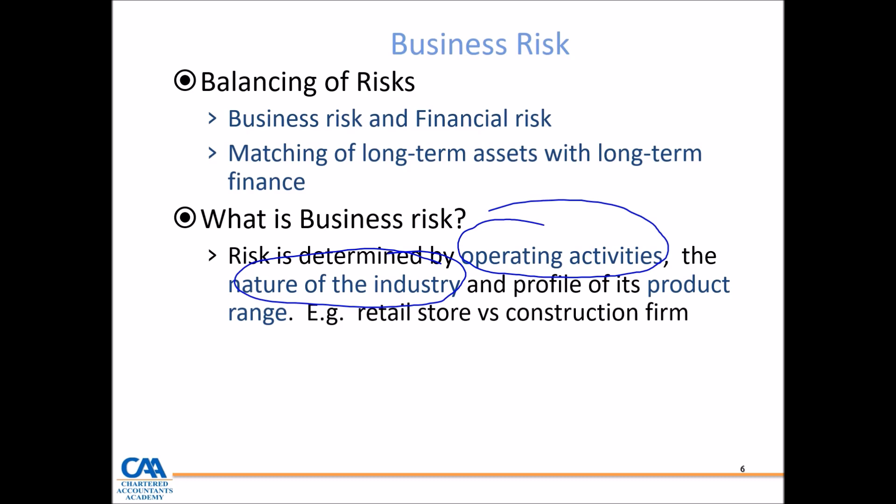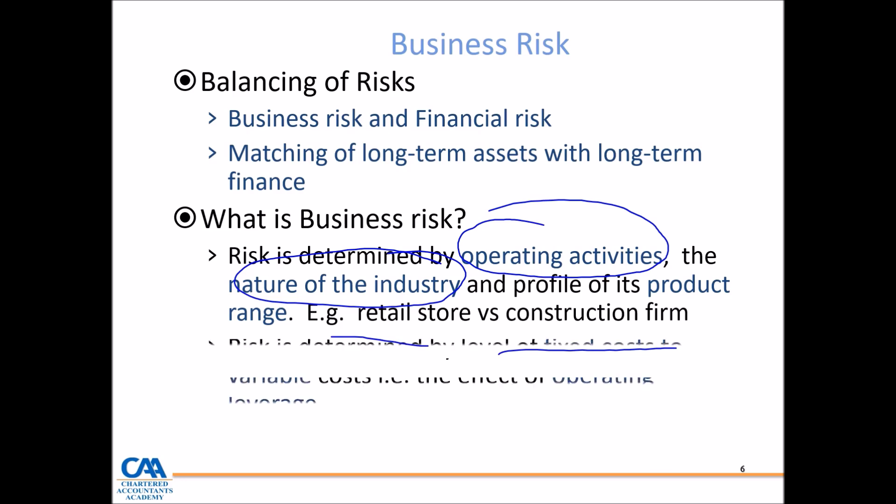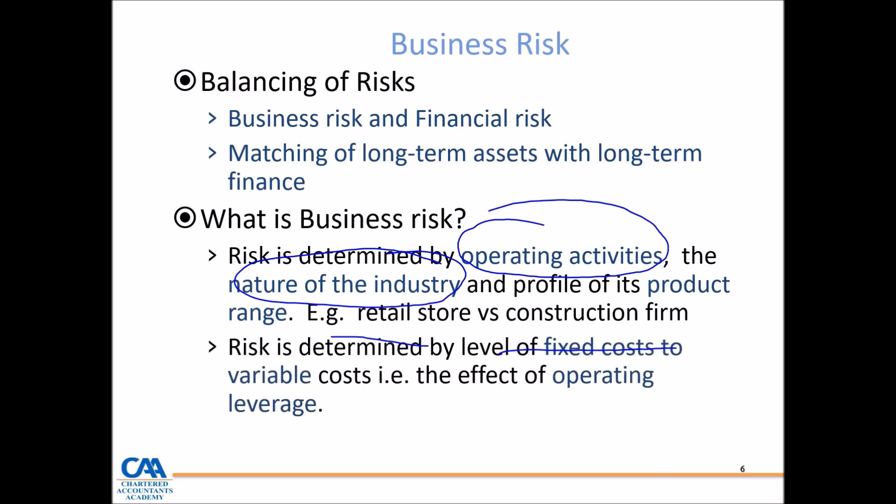For example, a company in the retail sector versus a company in the construction industry will face different operating risks because of the nature of the industry. Business risk is also determined by the level of fixed cost to variable cost — that is, the effect of operating leverage. A company with a high fixed cost structure needs to push more product volume to compensate for those high fixed costs.